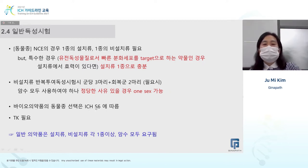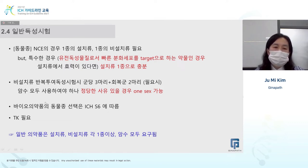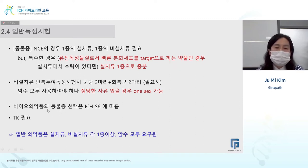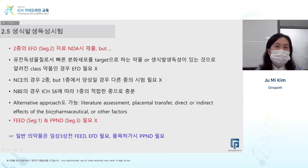Animal species selection for biopharmaceuticals must be based on ICH S6, and a relevant species must be selected. When we say relevant, the mechanism of toxicity can be applied — and it is usually the monkey. For general toxicity testing, toxicokinetics (TK) is required to see the relationship with clinical tests.